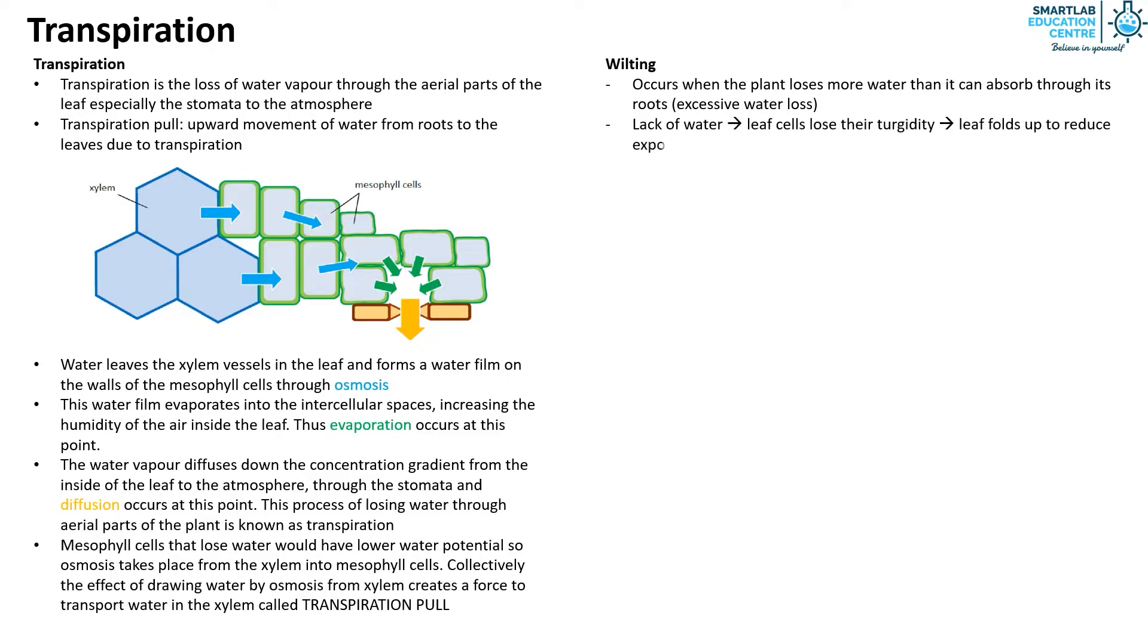The leaf folds up to reduce exposure to sunlight, and this causes the guard cells to be unable to carry out photosynthesis, thus unable to produce energy or ATP to maintain turgidity. This causes the stomata to close such that less water is lost through transpiration.